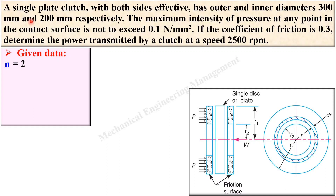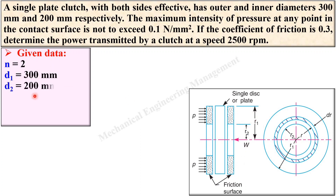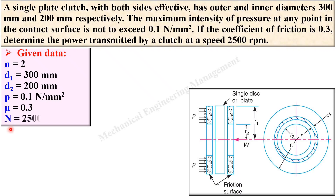The outer and inner diameters are 300 mm and 200 mm. So outer diameter d1 = 300 mm and inner diameter d2 = 200 mm. The maximum intensity of pressure p = 0.1 Newton per mm². The coefficient of friction μ = 0.3. Determine the power transmitted P at a speed of N = 2500 rpm. This is the given data and we are going to find the power P.